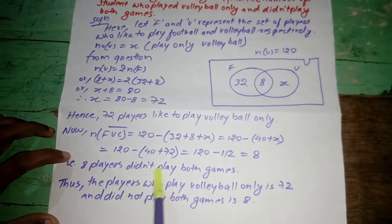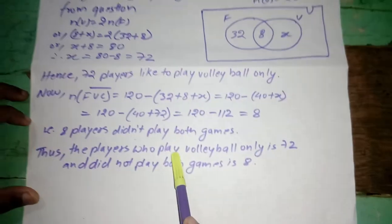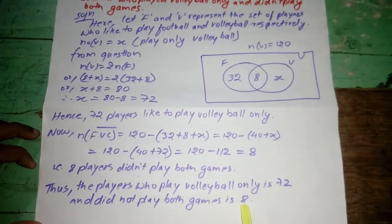Here, that is, 8 players did not play both the games. Thus, players who played volleyball only is 72 and did not play both the games is 8.